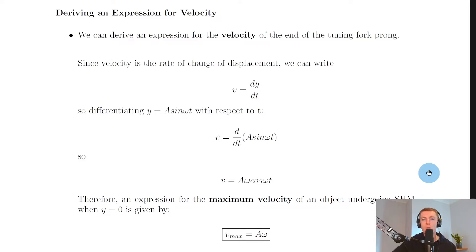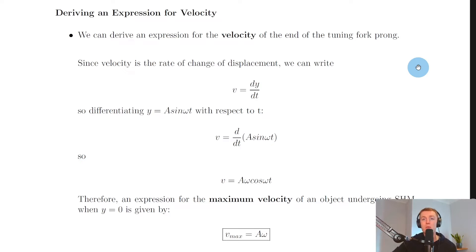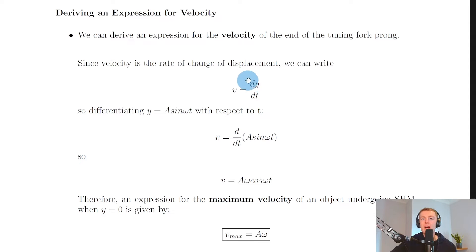For an object undergoing simple harmonic motion, you need to be able to derive an expression for its velocity. We can derive an expression for the velocity of the end of the tuning fork prong. In the previous theory video on the kinematics of SHM, we looked at expressions for the displacement of an object undergoing simple harmonic motion, and we're going to use that same example of a tuning fork. Since velocity is the rate of change of displacement, we can write v equals dy/dt, where y is our displacement.